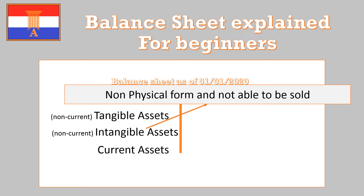Intangible assets are in non-physical form and you are not able to liquidate them — you can't really exchange them for money. Think about goodwill, which is the extra price you pay when taking over a company with a good name. You could also include a valuable recipe, medicine-related assets, or a patent. You do not expect to lose them within a year either, but the key distinction here is the non-physical form and the fact that you cannot liquidate them.